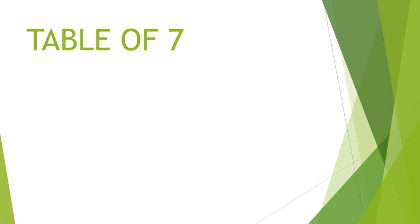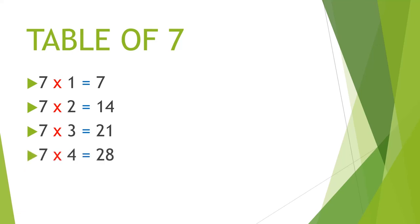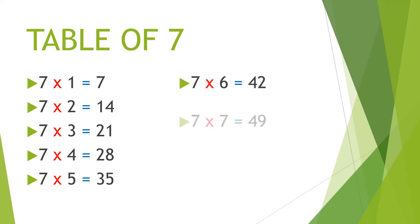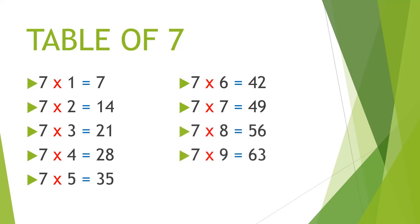Multiplication table of 7. 7 1's are 7, 7 2's are 14, 7 3's are 21, 7 4's are 28, 7 5's are 35, 7 6's are 42, 7 7's are 49, 7 8's are 56, 7 9's are 63, 7 10's are 70.